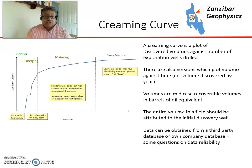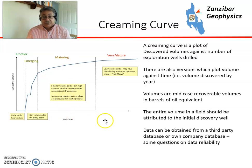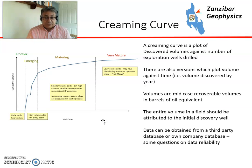A creaming curve — I'll zoom into this in a minute to show you what it does — it's a plot of discovered volumes against number of exploration wells drilled. There are also versions that plot volume against time, so volume discovered by year. The volumes used are mid-case recoverable volume estimates in barrels of oil equivalent. You can do them for gas or oil, but normally people tend to use BOE — barrels of oil equivalent.